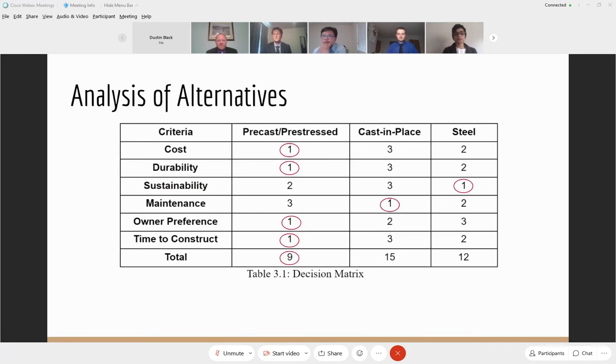For our design we encountered multiple alternatives but the critical analysis of alternative that we focused on was the selection of precast prestressed and cast-in-place elements. Each of them has its own advantages and disadvantages and we compared them based on their criteria. For cost estimate, precast prestress is more accurate than cast-in-place and steel. For durability, precast prestress has high durability since it has a lower water to cement ratio. For sustainability, steel comes first since it is 100 percent recyclable without loss of quality. For maintenance, cast-in-place requires less maintenance than precast prestressed and steel.